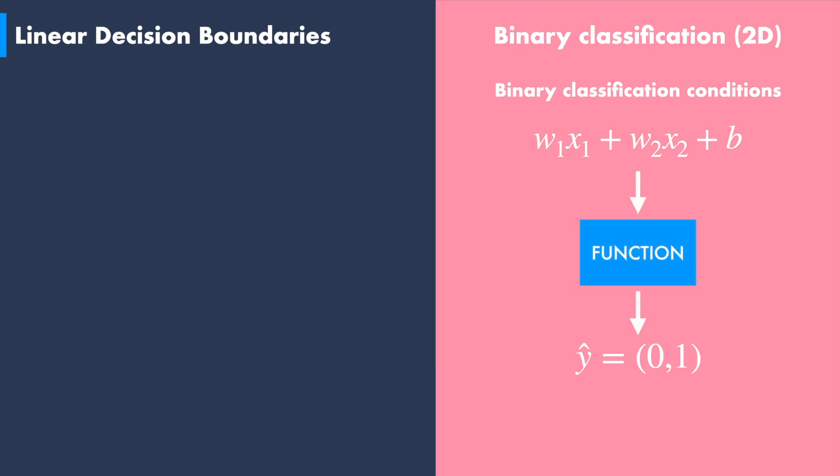In other words, we need a mathematical function that takes the equation of a line as input and then outputs a single value that is either zero or one, depending on the sign of the input.